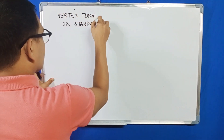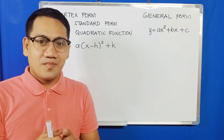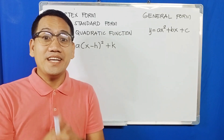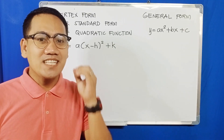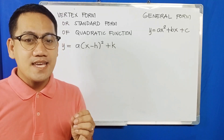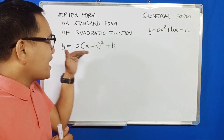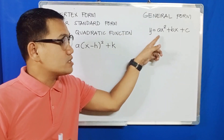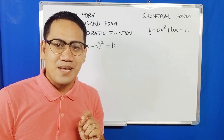Our task is to transform the vertex form, written as y equals a times the quantity x minus h squared plus k, into the general form written as y equals ax squared plus bx plus c. Let's try our first example.